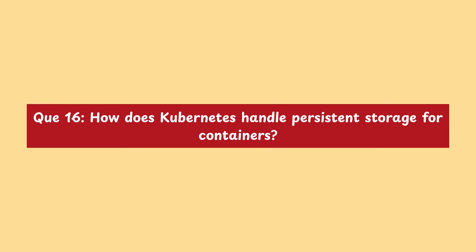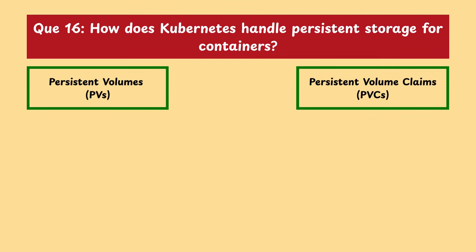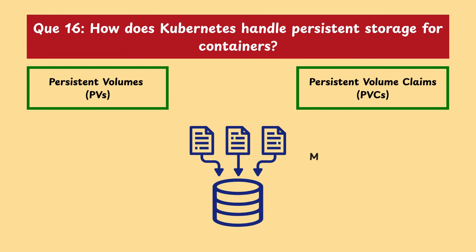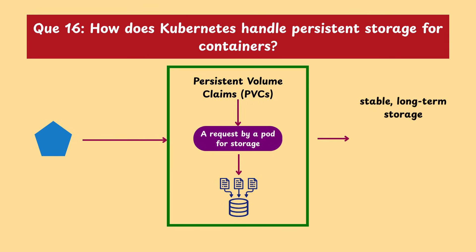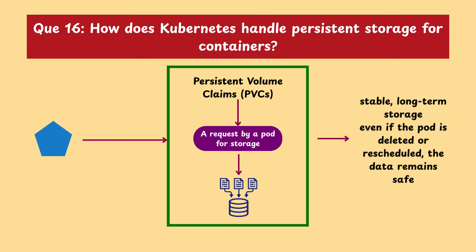Moving on with our next question: how does Kubernetes handle persistent storage for containers? Kubernetes uses persistent volumes and persistent volume claims to manage storage for stateful applications. A persistent volume is a piece of storage in a cluster provisioned by an admin or dynamically. A persistent volume claim is a request by a pod for storage, specifying size and access mode. Pods use PVCs to get stable, long-term storage — even if the pod is deleted or rescheduled, the data remains safe.